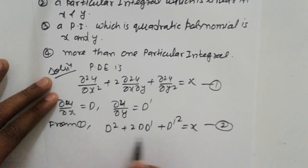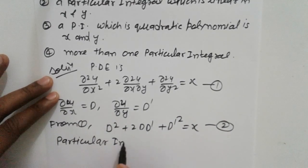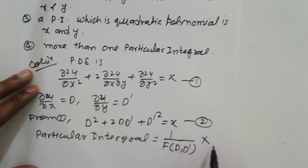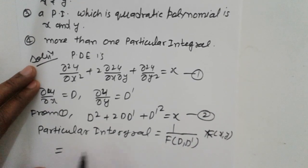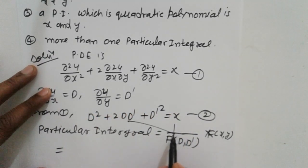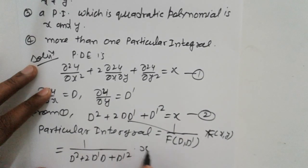Now, the particular integral is equal to 1/F(D, D') applied to the right-hand side, which is f(x, y). So the particular integral is 1/(D² + 2DD' + D'²) · x, which is 1/(D + D')² · x.